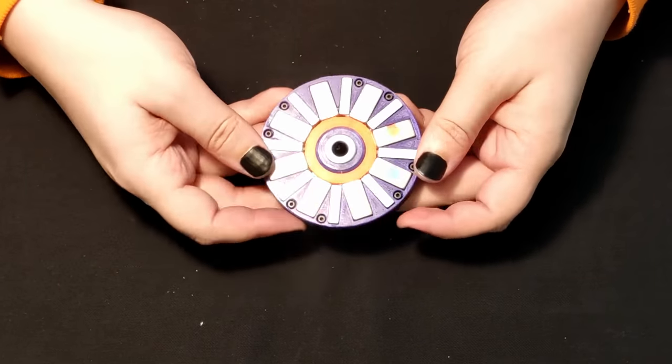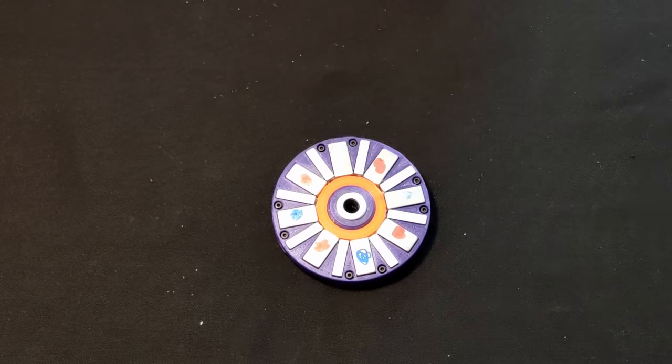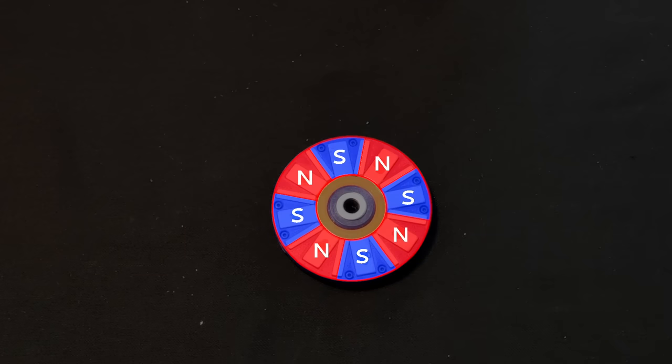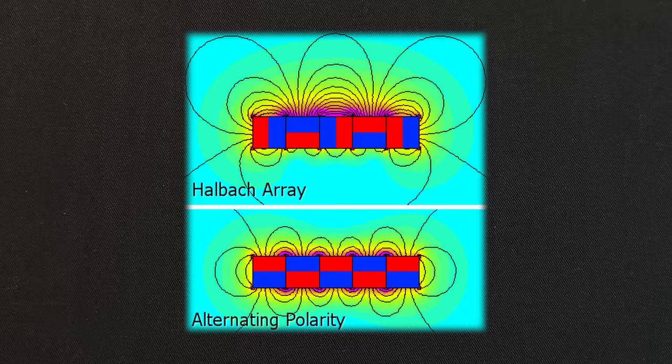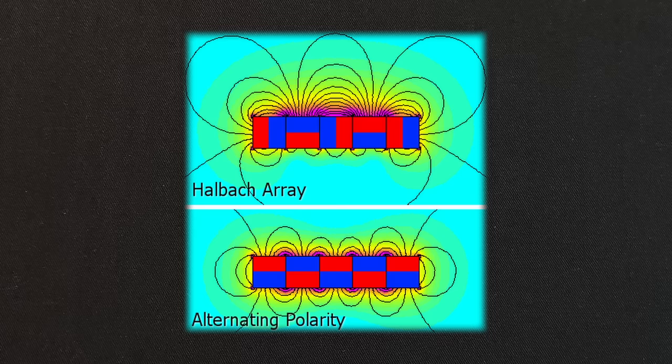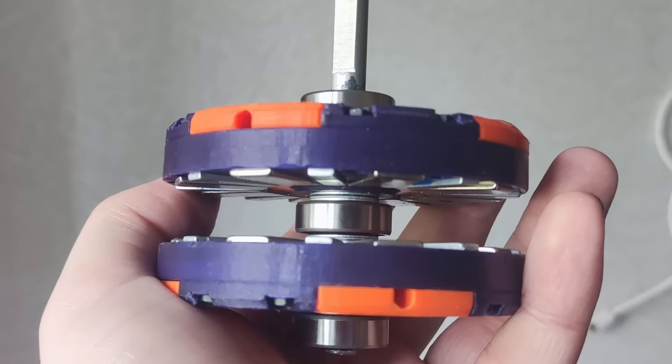The magnets were installed in a Hallbach configuration, which is a way of orienting the magnets to create a stronger magnetic field on one side of the magnets and the weaker one on the other. Stronger magnets are always better, so that's why I went for it.